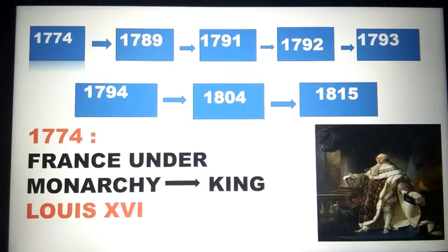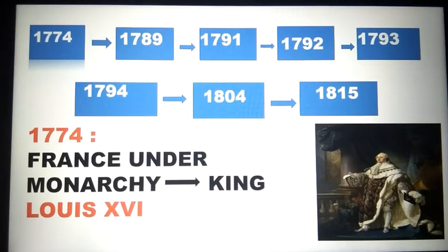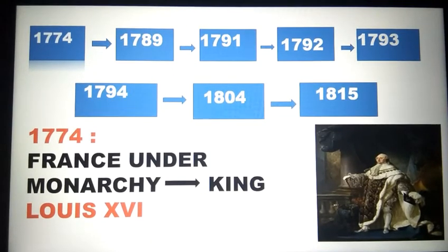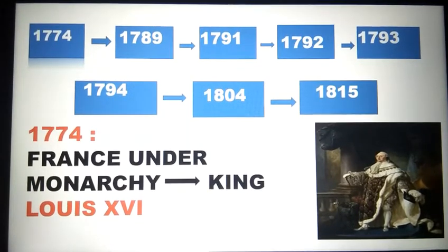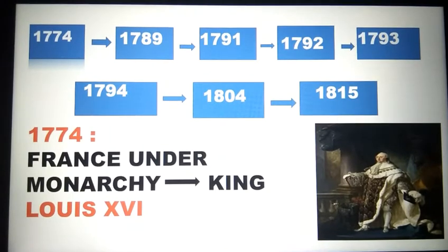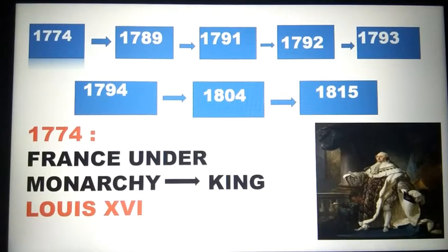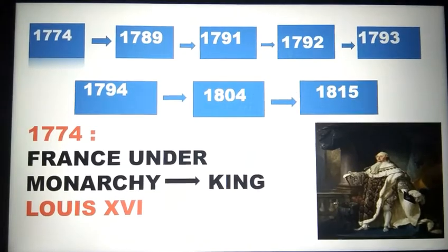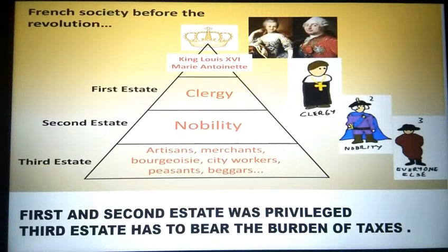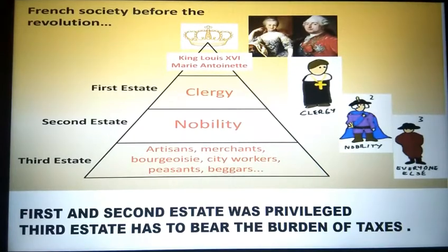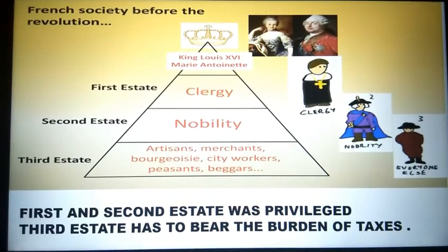We'll start from 1774 and we'll go till 1815, where the chapter ends. Talking about 1774, as we all know, who was the ruler of France at that time? It was King Louis XVI. France was a monarchy. Monarchy means rule of one — the rule of the king. Let's first discuss about the society of France. French society, before the revolution, was divided into three estates.